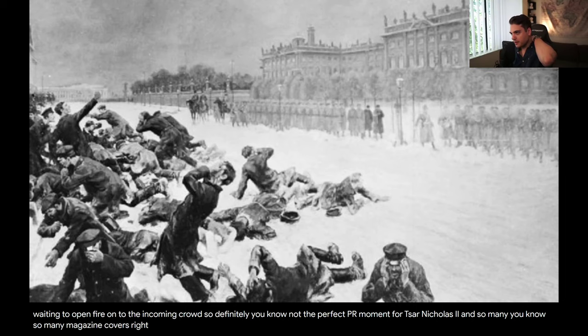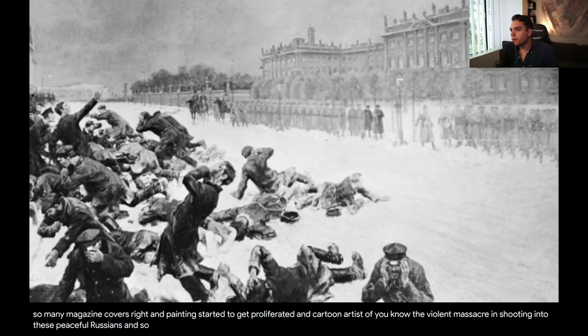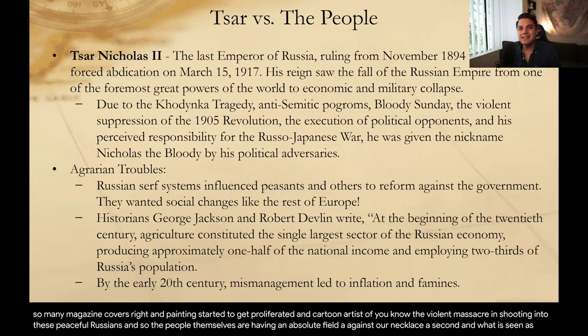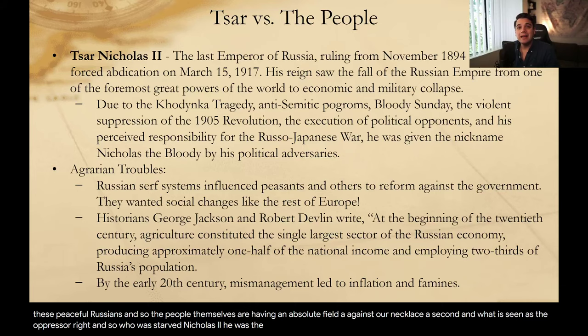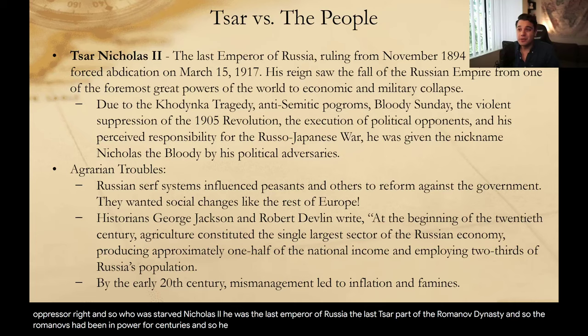So many magazine covers and paintings started to proliferate — cartoon artists depicting the violent massacre and shooting into these peaceful Russians. The people themselves are having an absolute field day against Tsar Nicholas II and what is seen as the oppressor. Who was Tsar Nicholas II? He was the last emperor of Russia, the last Tsar, part of the Romanov dynasty. The Romanovs had been in power for centuries, and he is going to be the last one.